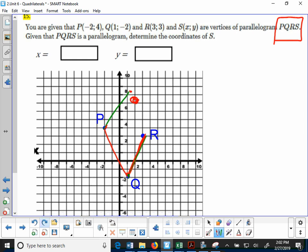So all we're going to do now is count. From Q to R, we are going up 1, 2, 3, 4, 5, and then we are going to the right 2. So we are going to apply the same thing to P. We are going to go up 1, 2, 3, 4, 5, and then we are going to go to the right 1, 2.